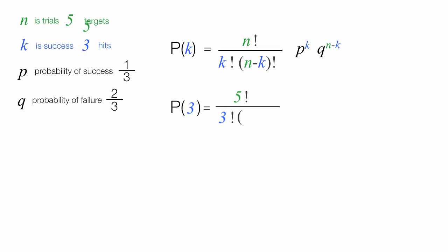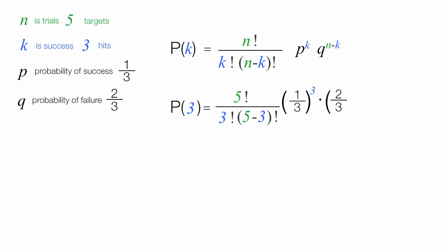The number of trials is n — in this case, five — minus the successes k, in this case three, all factorial. I take all this times the probability of success raised to the k power, in this case raised to the third power, times the probability of failure, which is two-thirds, raised to the n minus k power, which is raised to the five minus three power.